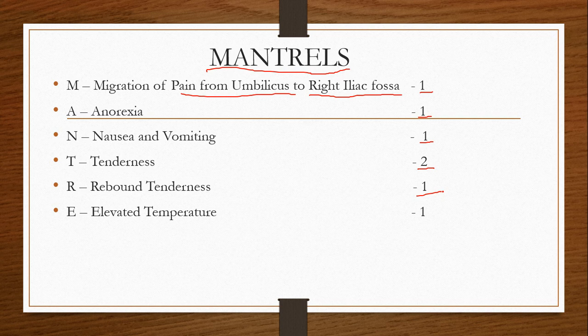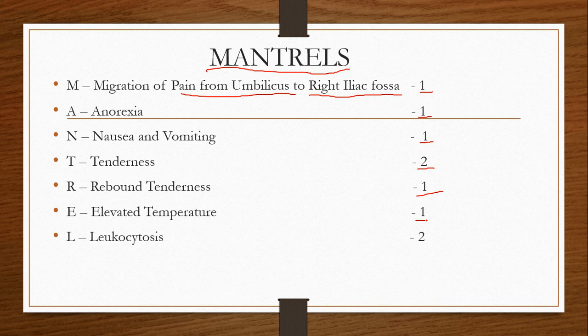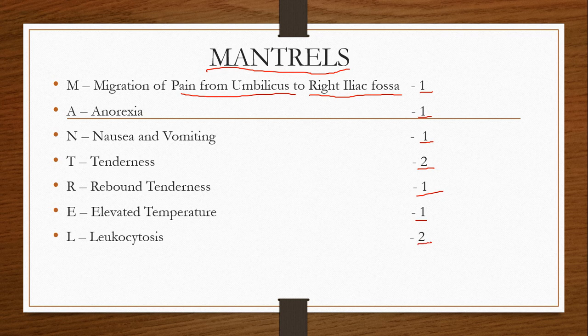E stands for elevated temperature or fever — the body temperature rises above 100.4°F or greater than 38°C, score is 1. L stands for leukocytosis, meaning an increase in white blood cells. Normally the WBC count is between 4,000 to 11,000 per millimeter cube, but in this case it increases above 11,000 — score is 2, as it is also a very important sign.